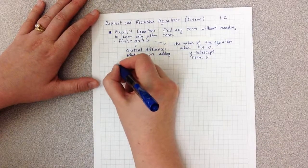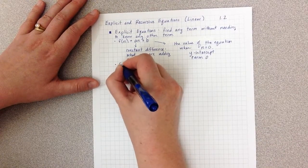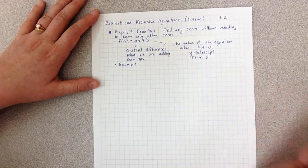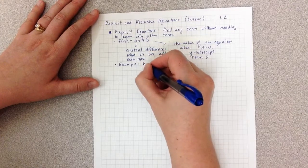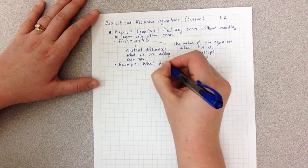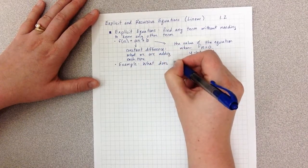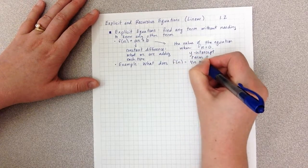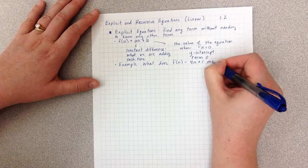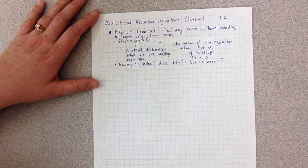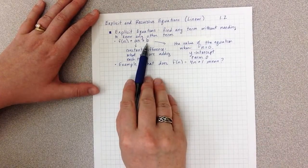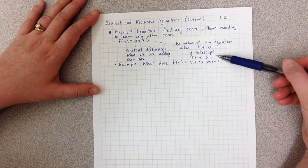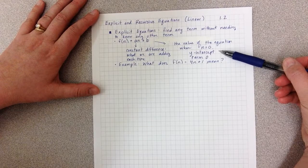Let's look at an example. So something that you might be asked about explicit equations is something like, what does f(n) equals 4n plus 1 mean? So remember, the 1 is the b, and it represents the equation when n equals 0, or term 0, or the y-intercept.